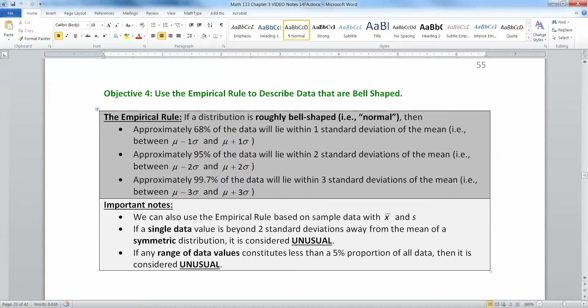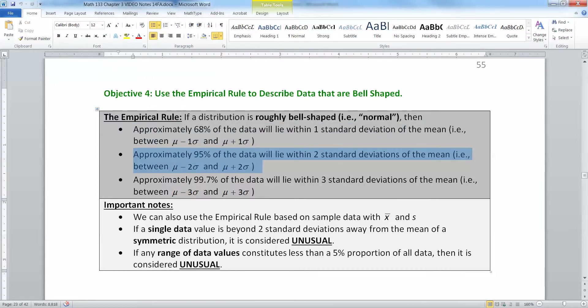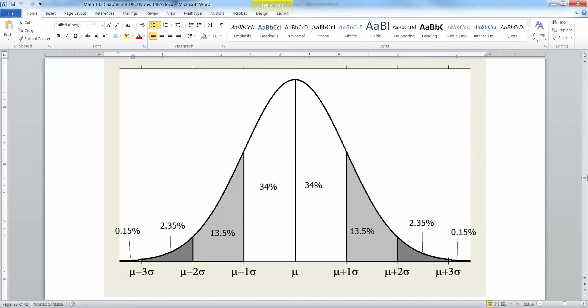Right here in section 3.2 is the empirical rule. It says that if a distribution is roughly bell-shaped, then you have approximately 68% of your data within one standard deviation of the mean, 95% within two standard deviations, and 99.7% within three standard deviations. That breaks down to this picture where mu is your mean and sigma is your standard deviation.